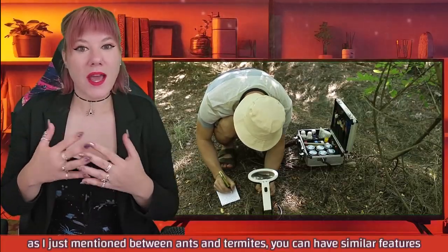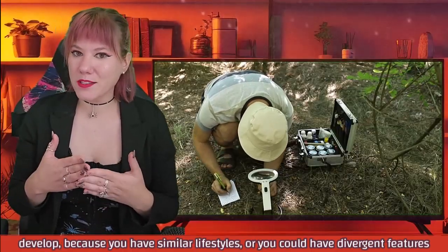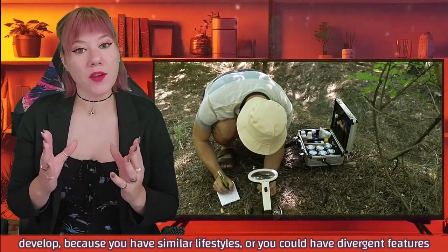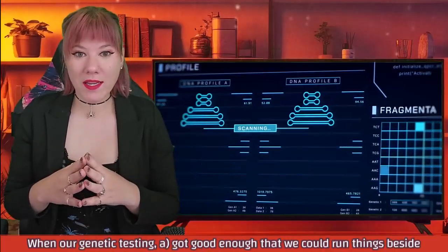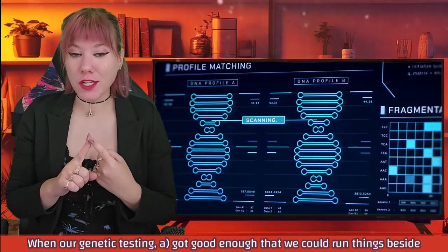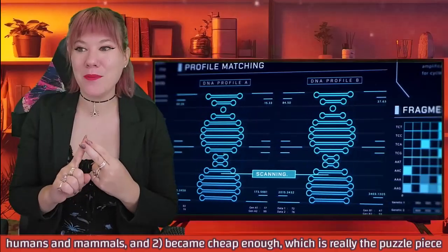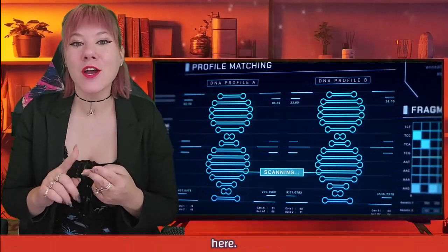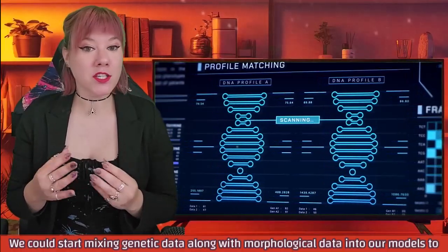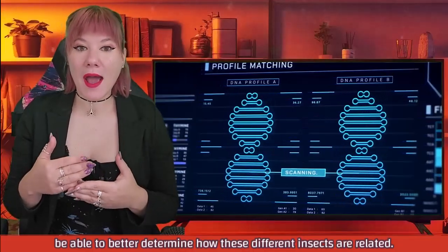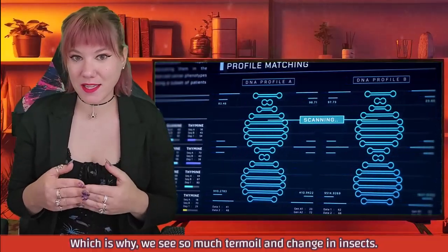However, as I mentioned, between ants and termites, you can have similar features develop because you have similar lifestyles, or you can have divergent features appear because you have diversified lifestyles. When our genetic testing got good enough that we could run things besides humans and mammals, and became cheap enough — which is really the key puzzle piece — we could start mixing genetic data along with morphological data into our models to better determine how these different insects are related. This is why we see so much turmoil and change in insect taxonomy.